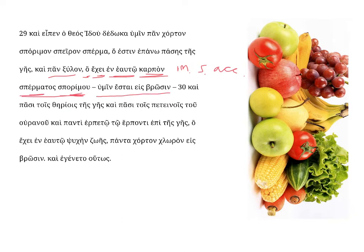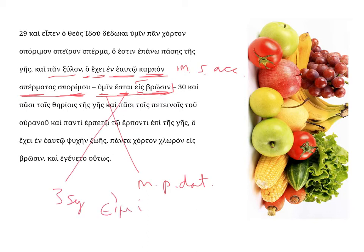Humin estai es brosen — to you, masculine plural, and dative, dative of possession — to you, they will be, estai, as food, es brosen. Here, ace, the preposition, with the accusative brosen, is used with an idea of purpose. And estai is a third singular future indicative from the verb emisum, which means to be. In the future, this verb is deponent, thus this middle ending. They shall be food for you.